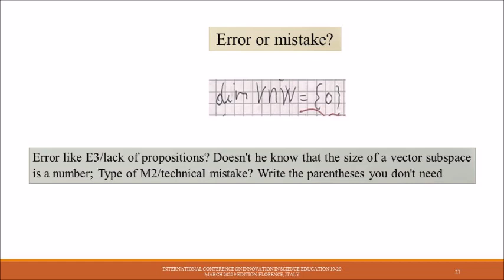Error like E3: Lack of propositions. Doesn't he know that the size of a vector subspace is a number? Type M2: Technical mistake. Write a parenthesis you don't need.